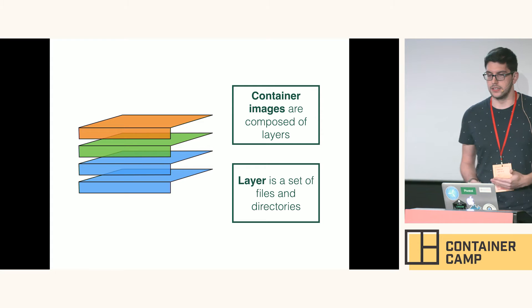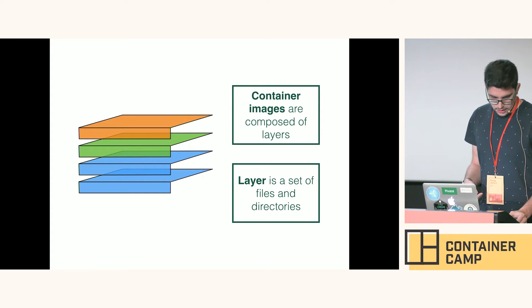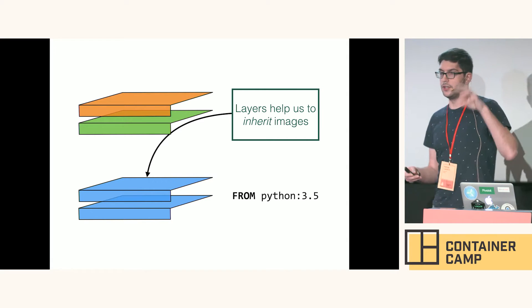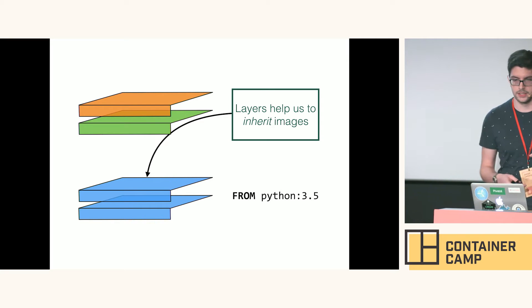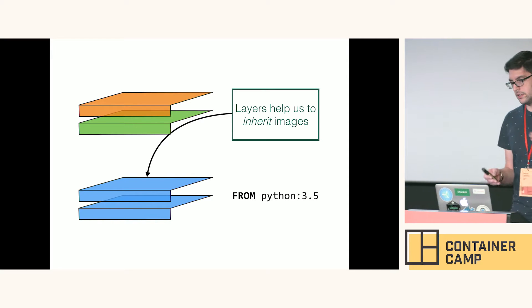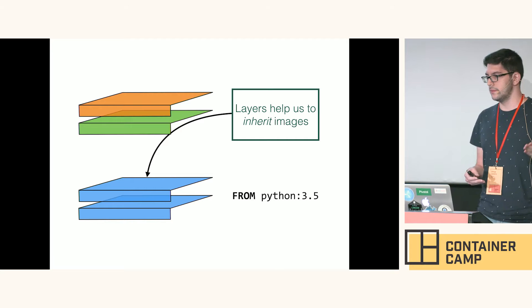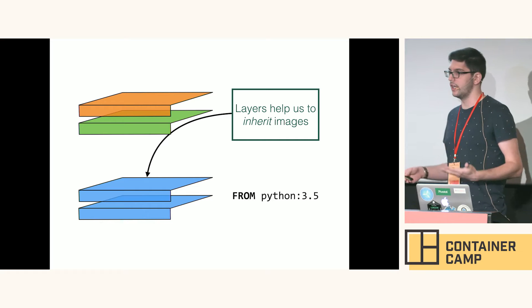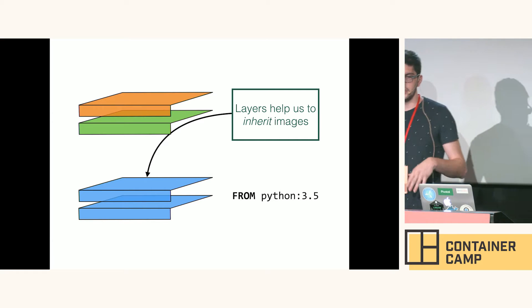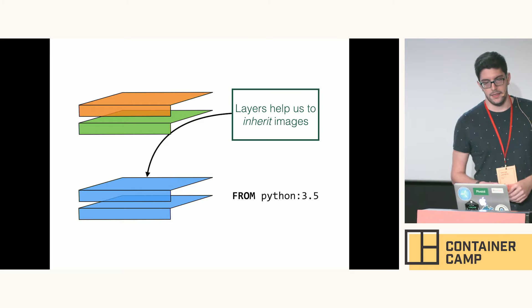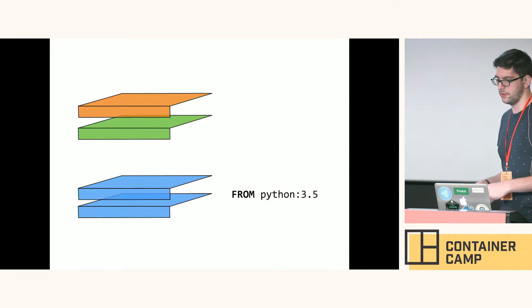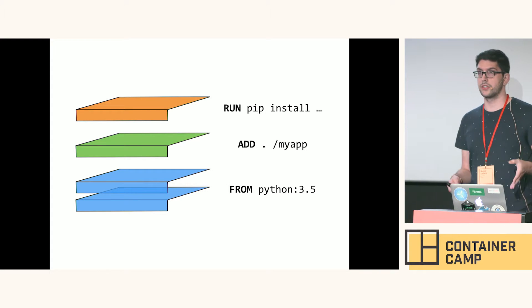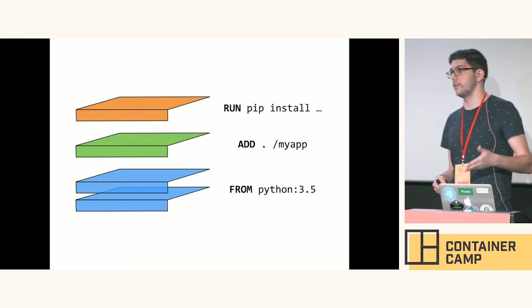These lines match up with layers. Container images are composed of layers, and a layer is essentially a set of files and directories — a set of file system changes applied on top of the previous layer, forming a root file system for the container to run. A root file system is an ordered combination of these layers. The order is important. So, starting with the FROM statement defining the base image, each subsequent step in the Dockerfile maps to a layer: the green layer adds source code, the orange layer installs dependencies.